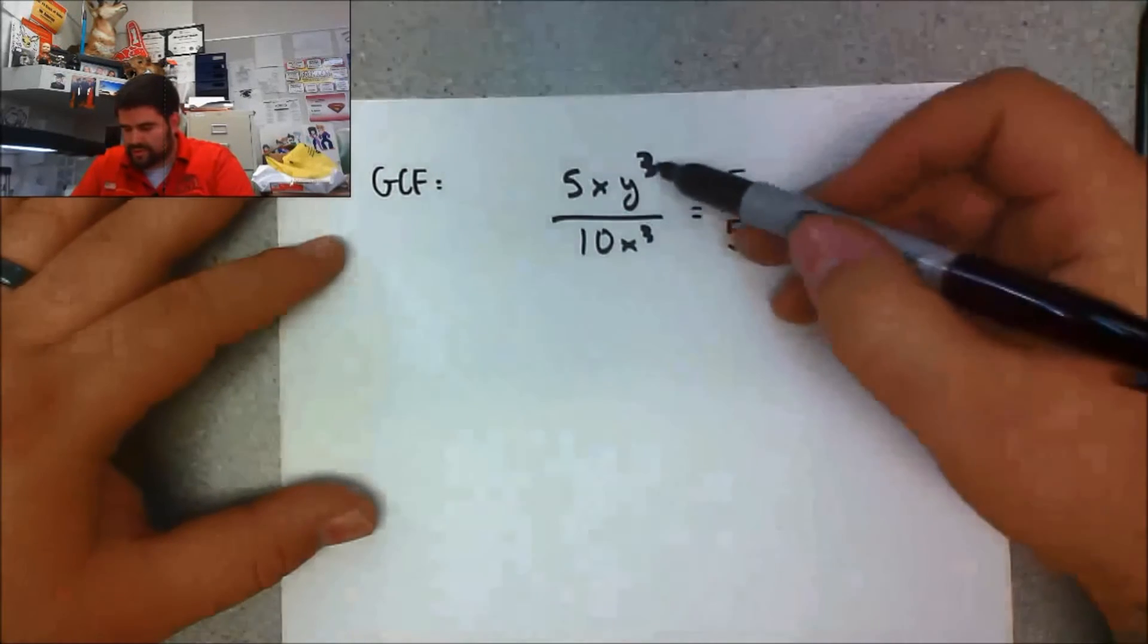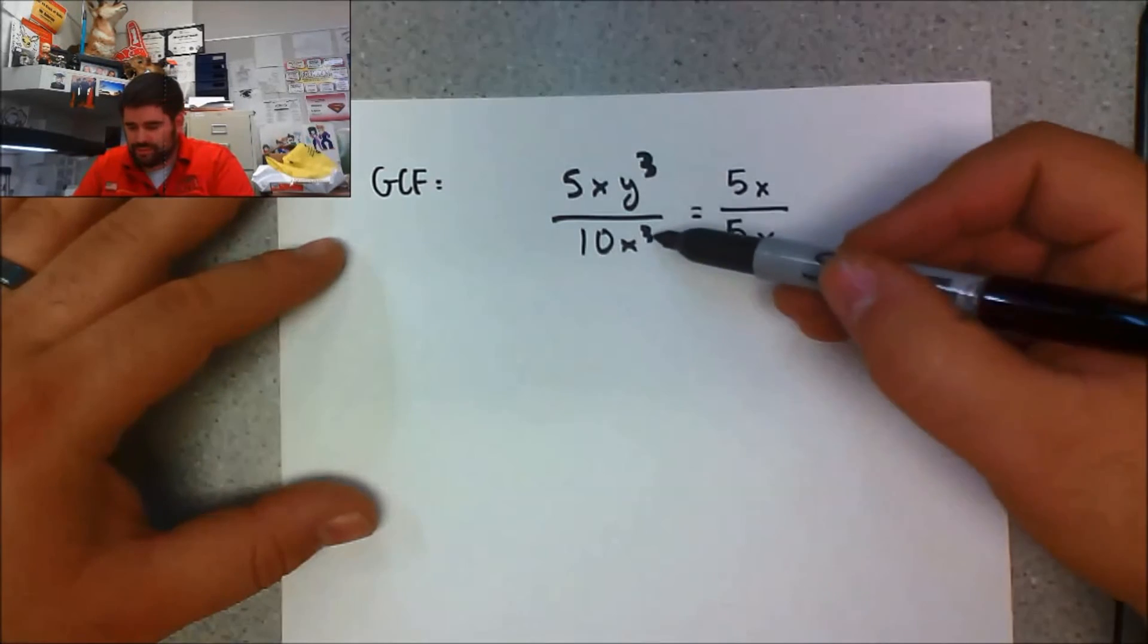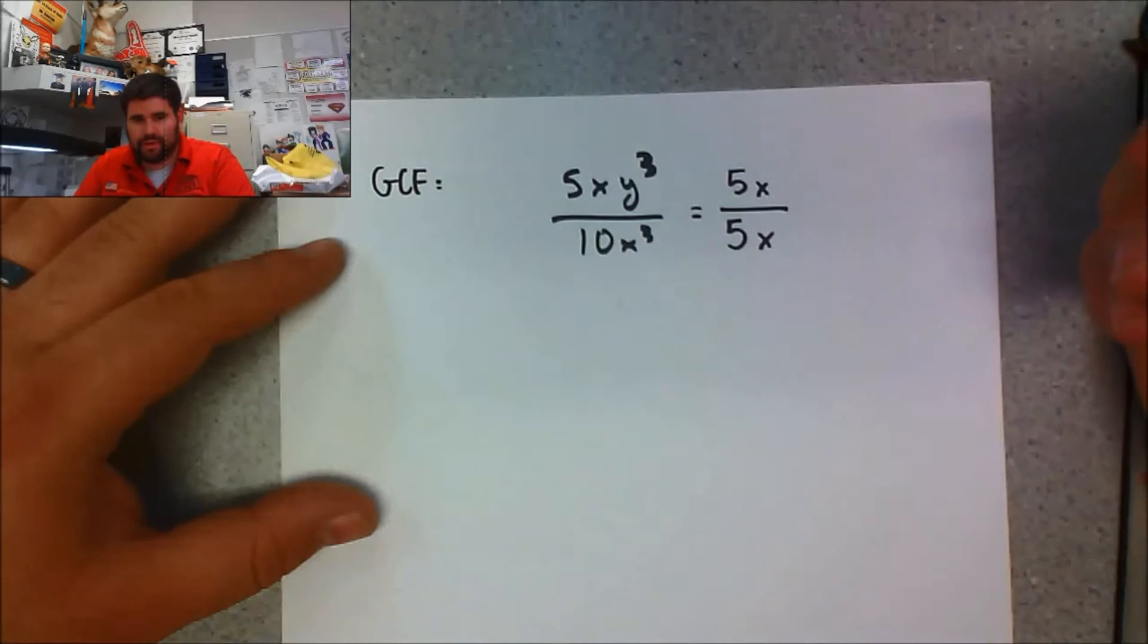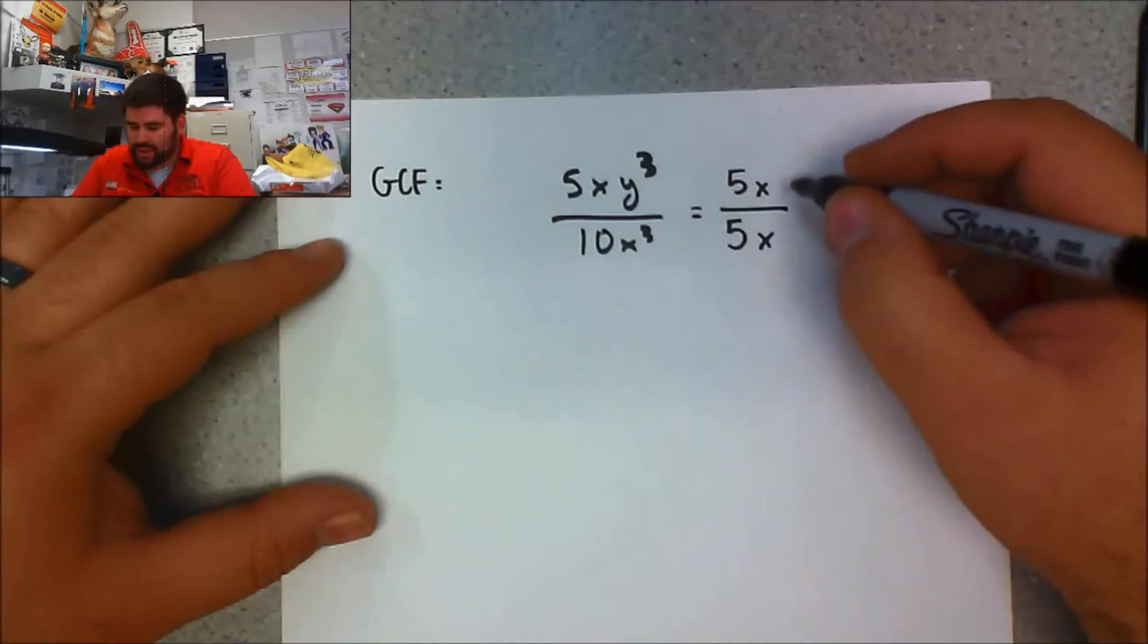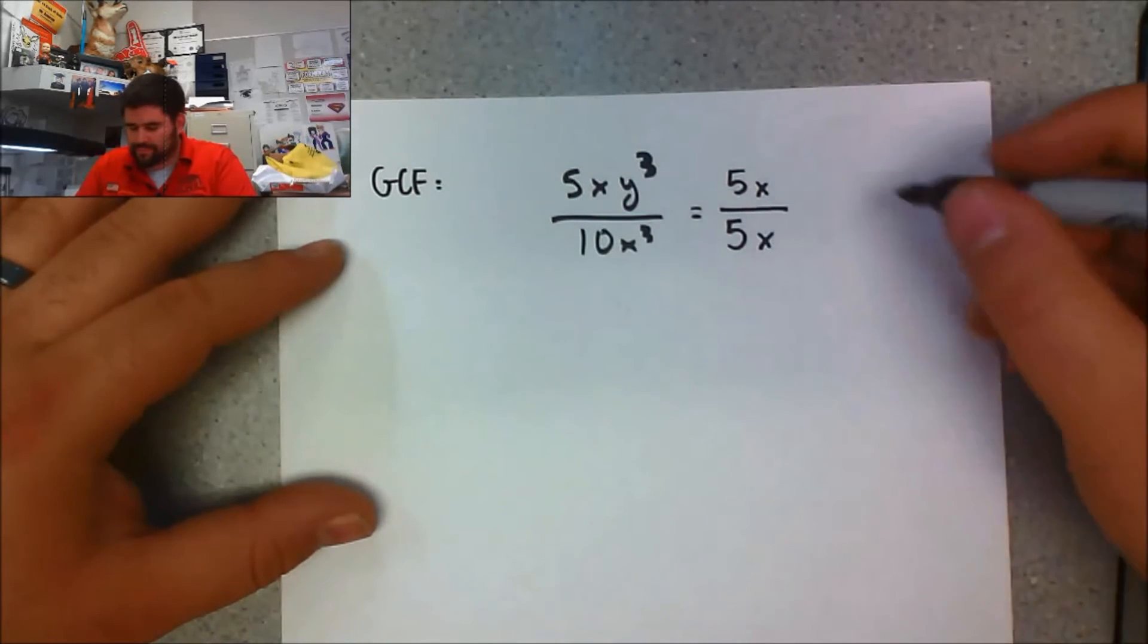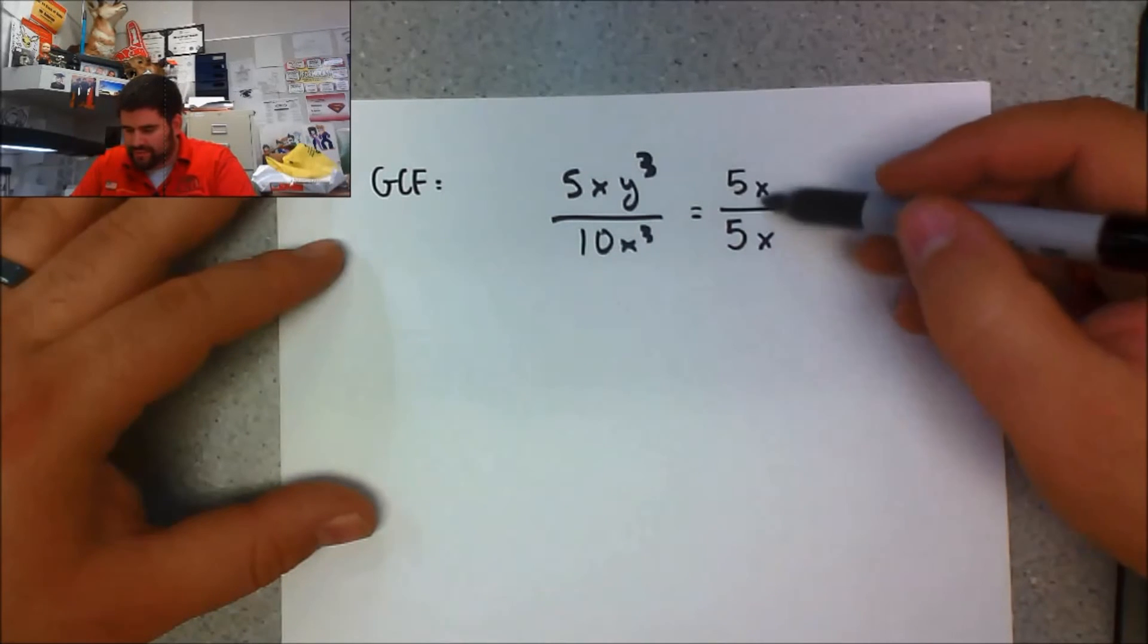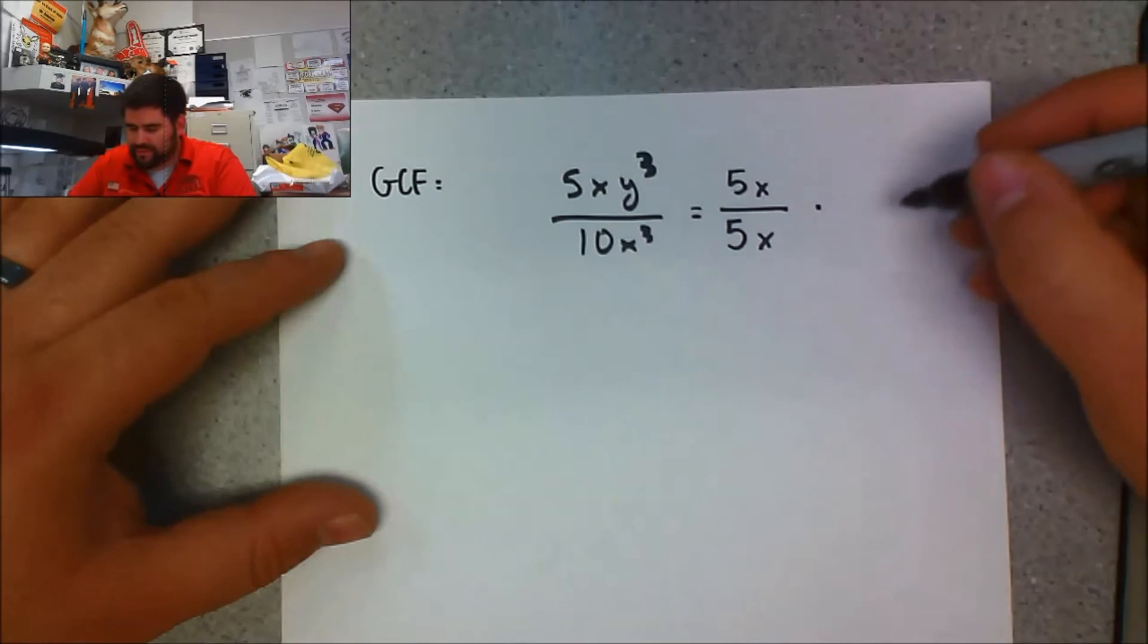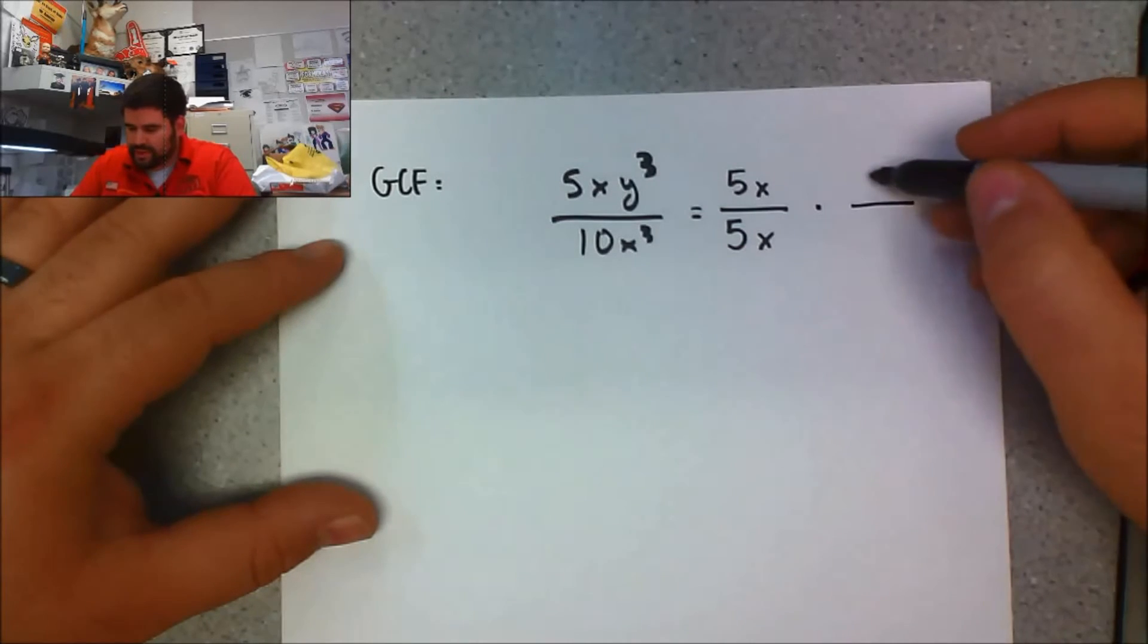I know they have an x in common. I see there's a y up here, but I don't see a y down here, so I can't take that out. So their GCF is 5x.